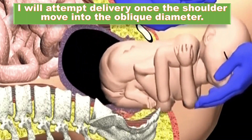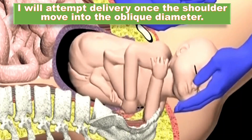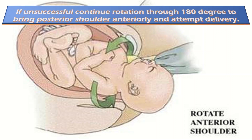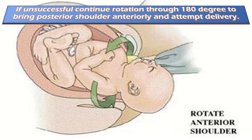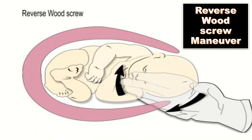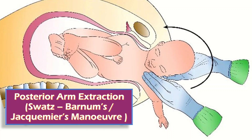I will attempt delivery once the shoulders move into the oblique diameter. If unsuccessful, I continue rotation through 180 degrees to bring the posterior shoulder anteriorly and attempt delivery. Next comes the reverse Wood screw maneuver: apply pressure to the posterior aspect of the posterior shoulder and attempt to rotate it 180 degrees in the opposite direction to that described in the Wood screw maneuver.